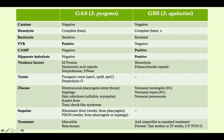Group B strep has hemolysin, which breaks down red blood cells making it beta hemolytic. It's also encapsulated with a polysaccharide capsule, similar to strep pneumo. For group A strep, streptolysin O is analogous to hemolysin, but the important toxins are the pyrogenic toxins — particularly SPA and SPC — which are both superantigens that cause toxic shock-like syndrome.